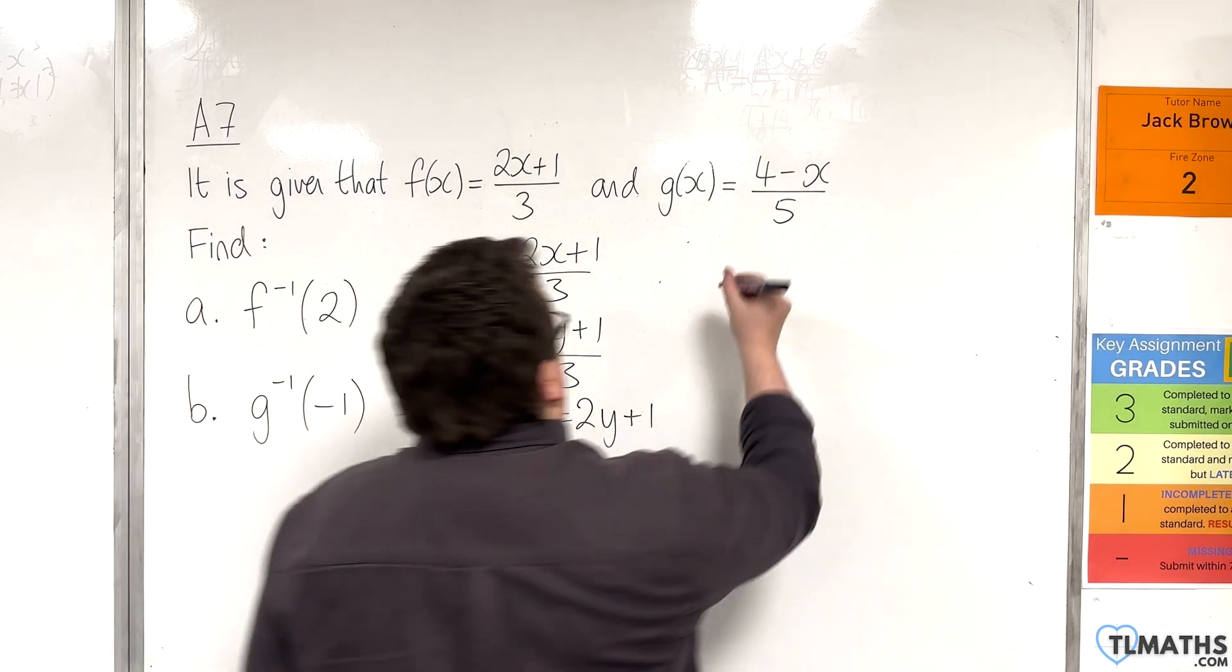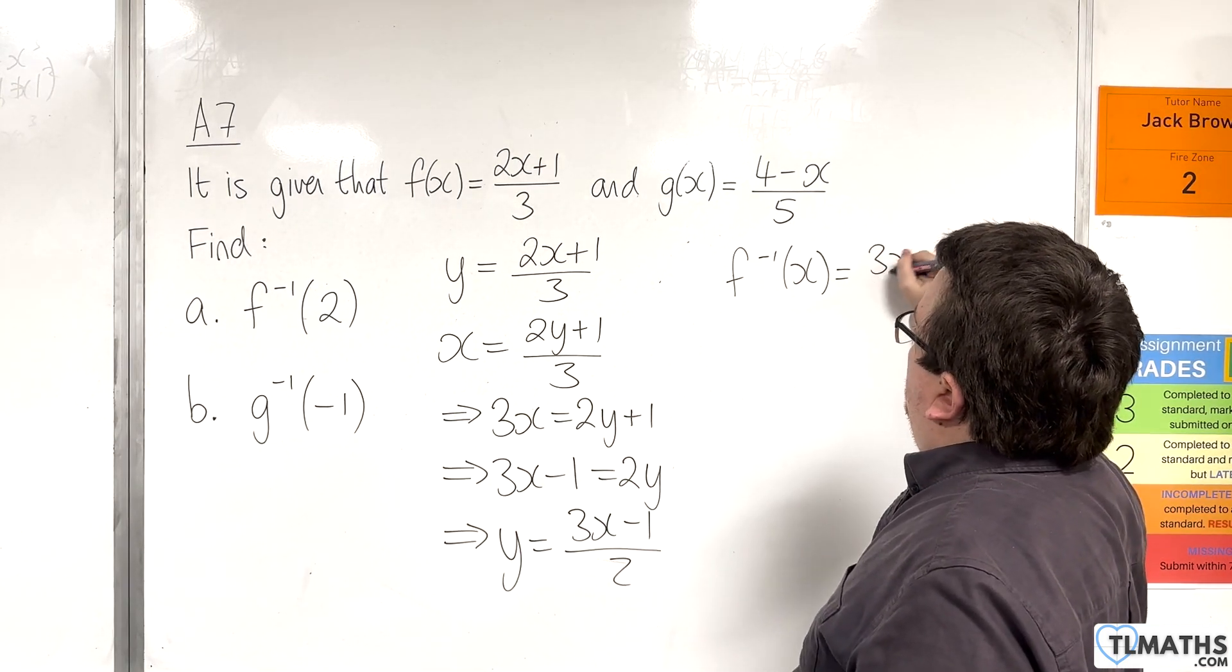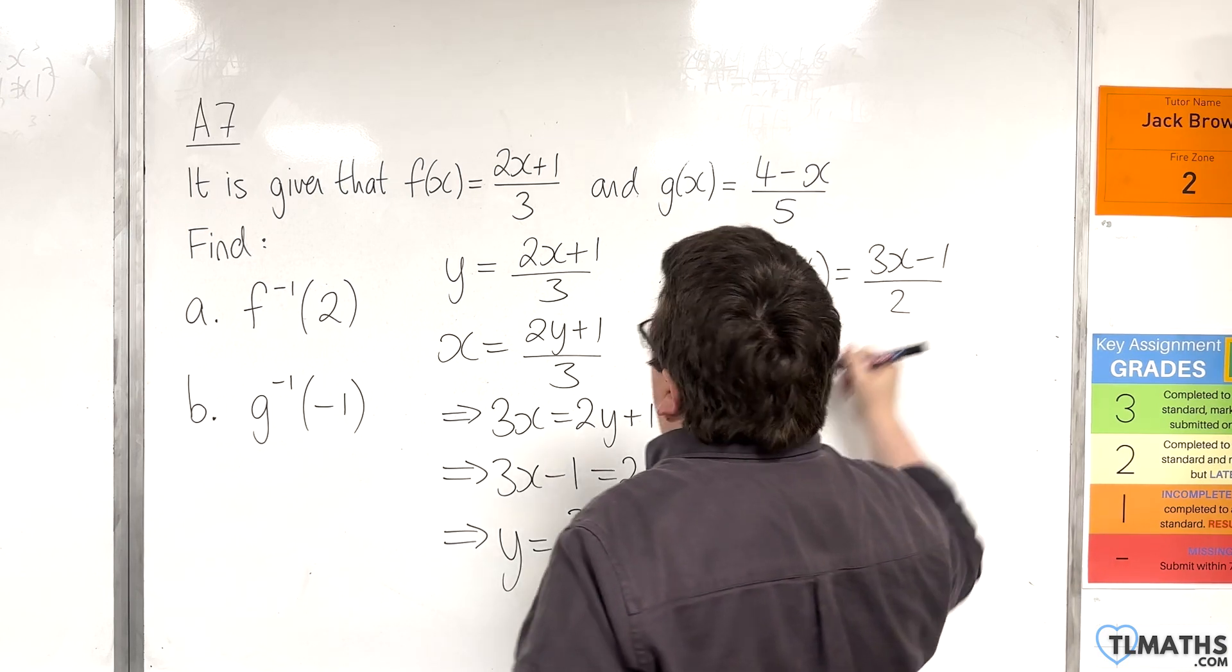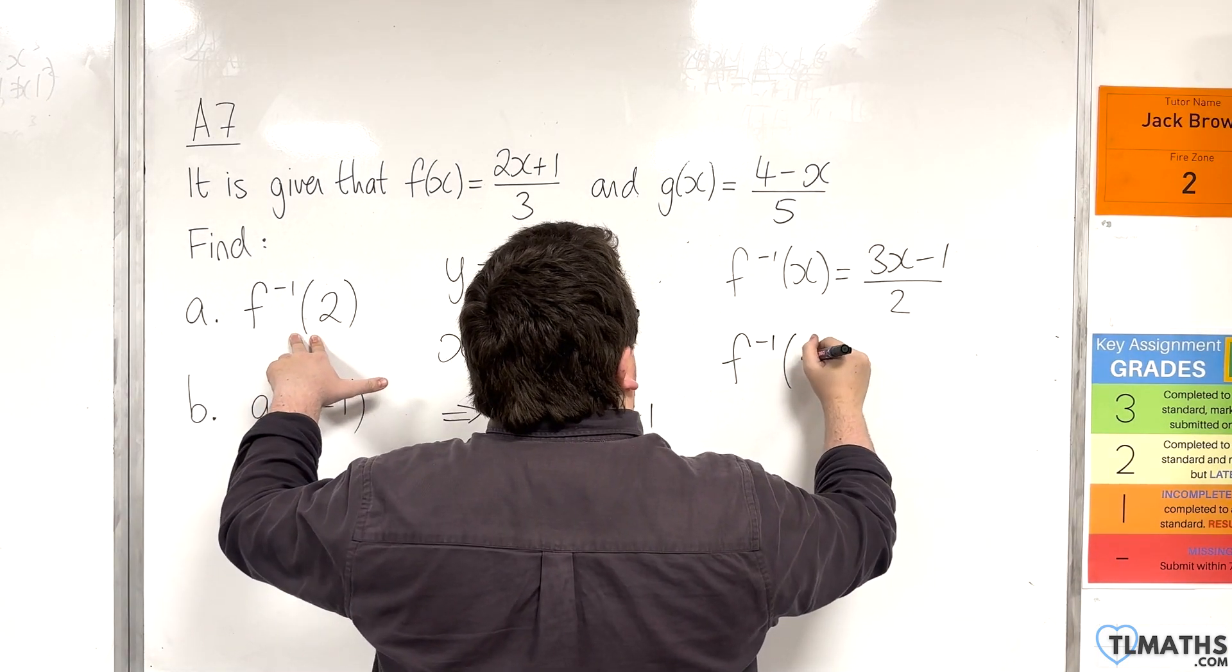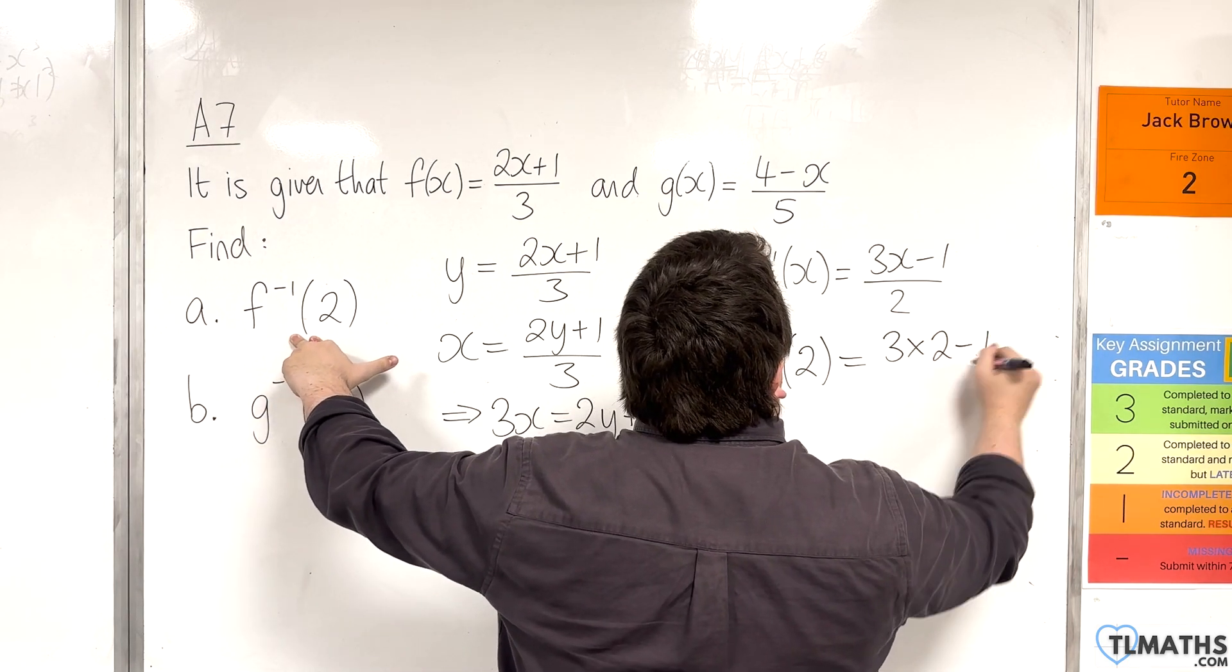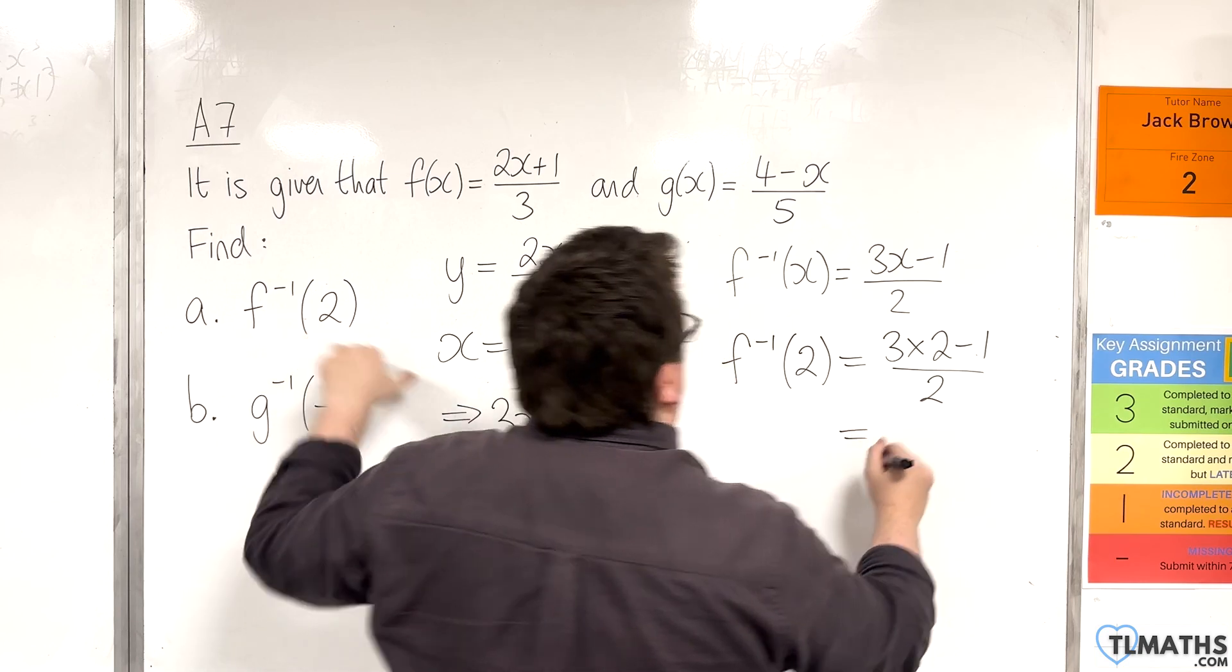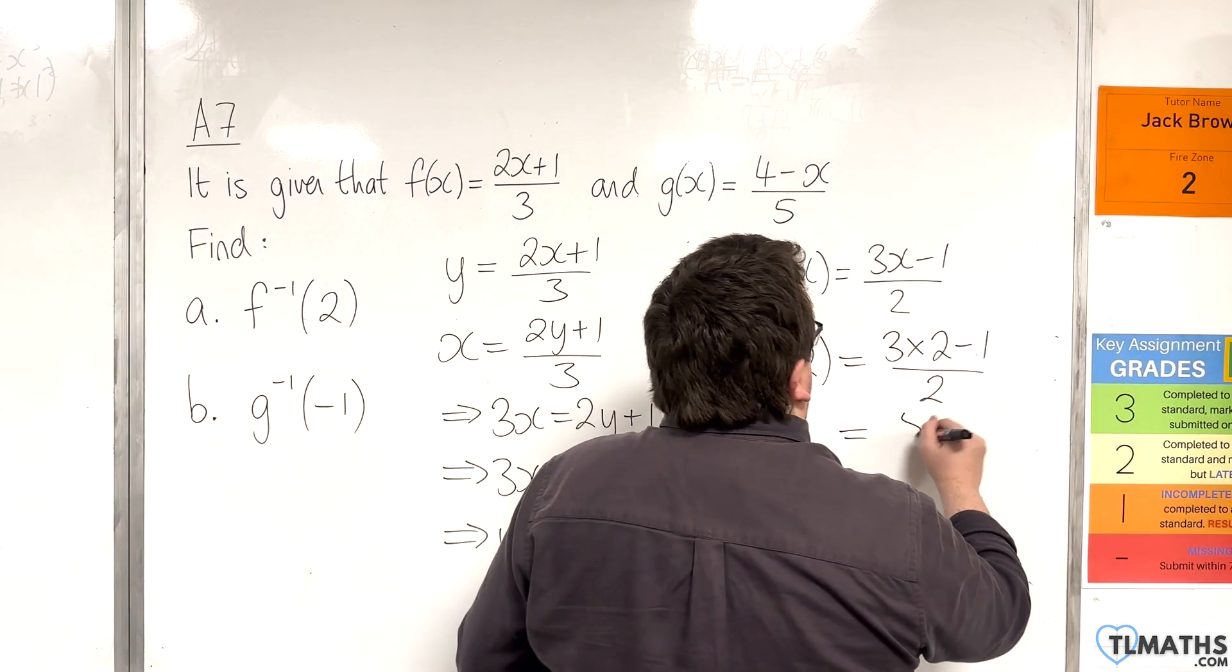So, we now know that the inverse function of f will be 3x take away 1 over 2. And, if I want to find the inverse function of f of 2, that's 3 lots of 2, take away 1 over 2. So, that's 6 take away 1, which is 5, over 2, which is 5 halves.